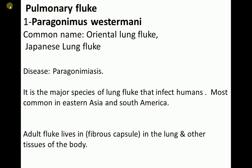Pulmonary fluke includes Paragonimus westermani. The common name of this parasite is oriental lung fluke or Japanese lung fluke. This is Paragonimus — it is the major species of lung fluke that infects humans, most common in eastern Asia and South America. The adult fluke lives in fibrous capsules in the lung and other tissues of the body.